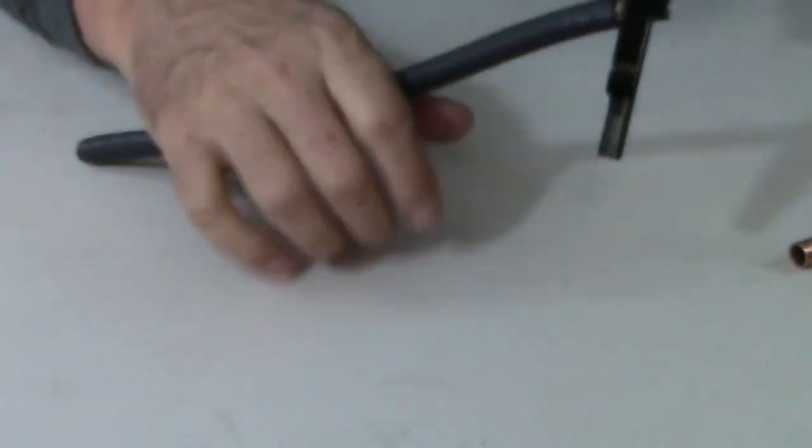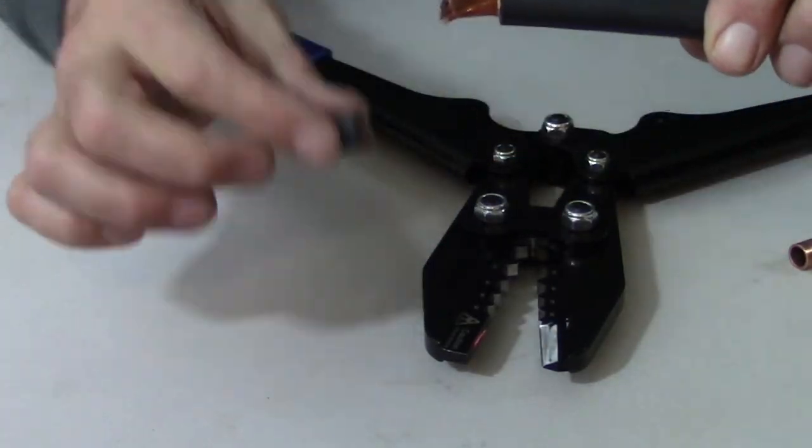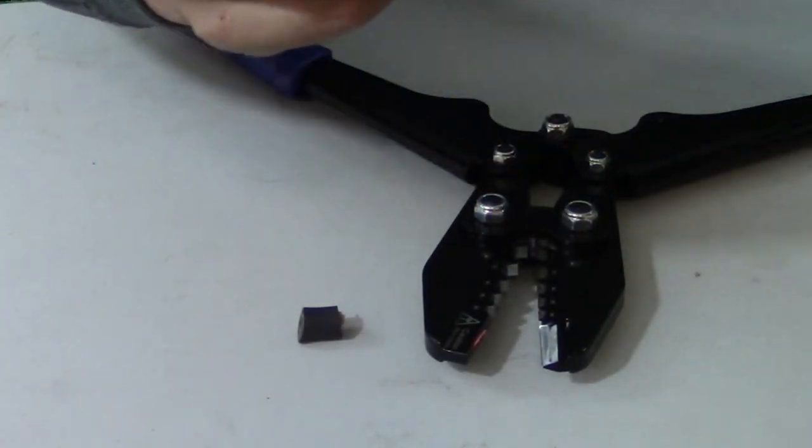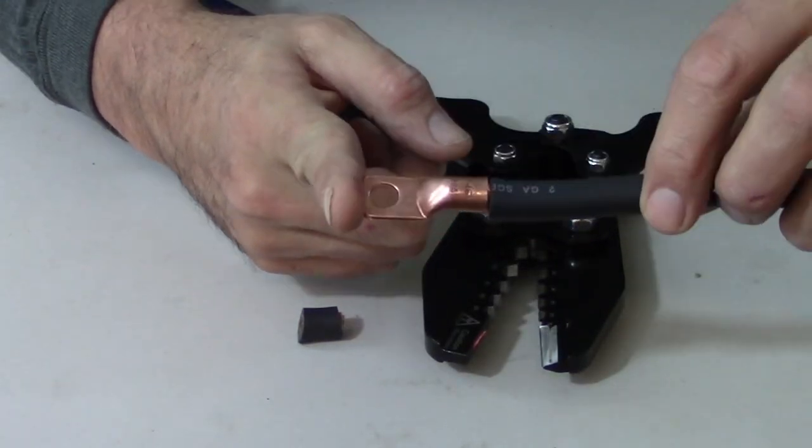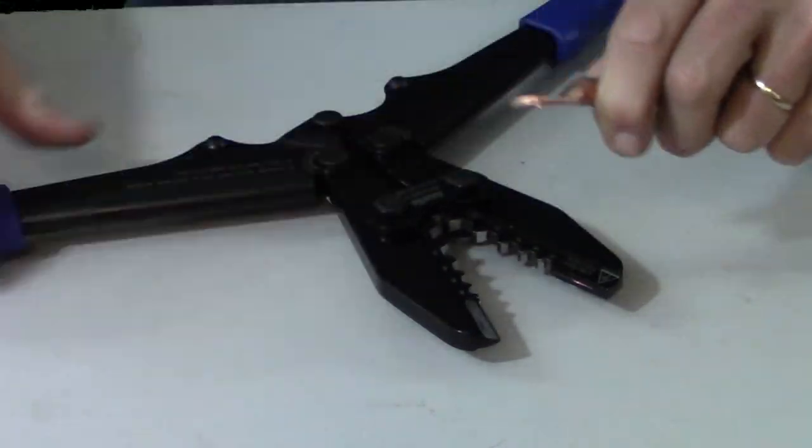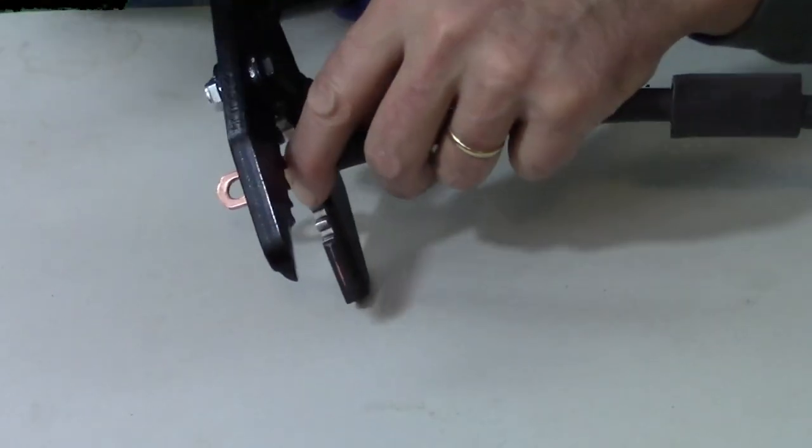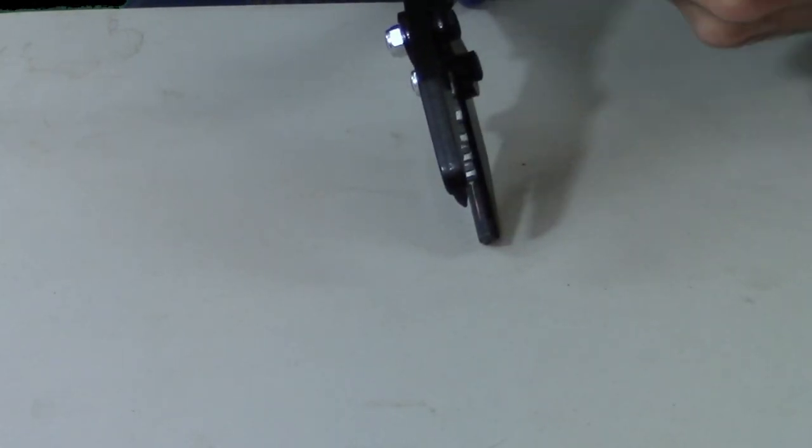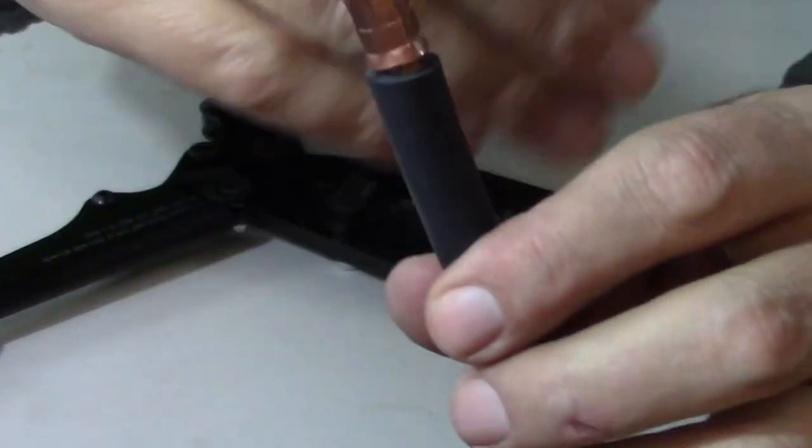Next one I did was the 2 gauge wire. And went ahead and got that stripped, put the lug on. And as I got on the bigger wires, it did actually get easier to crimp. And part of that is because of mechanical advantage. You can see that the larger size lugs, larger size wires, are closer to the pivot point of that crimper. So the mechanical advantage is there.